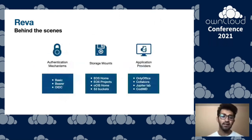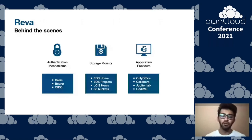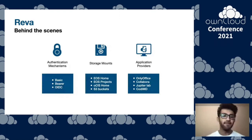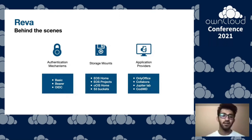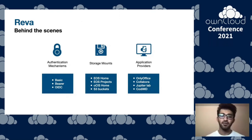Let's go behind the scenes and look into exactly how this interoperability is provided. You can have multiple instances of a given service type running simultaneously, and each of these instances can talk a different language and support different drivers. For authentication mechanisms, you can have basic, bearer, and OIDC auth all running at the same time. You could have multiple storage mounts including EOS, OSIS, and S3. And you can have multiple apps from editing applications to scientific notebooks — OnlyOffice, Collabora, JupyterLab, CodeMD, and so on.